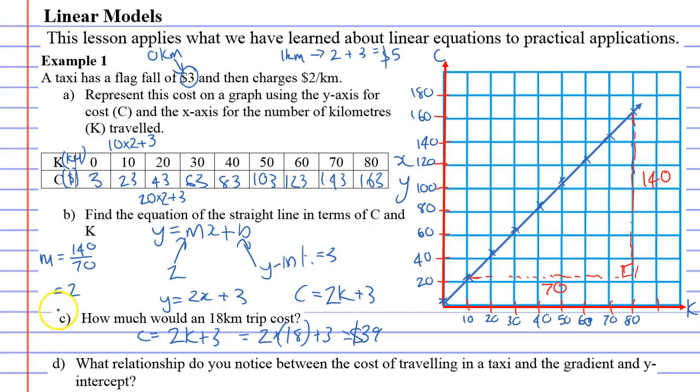Last of all, question D. If we look at the cost of a taxi, it was $2 per kilometer, and the flag fall was $3. Down here, we found that the gradient was 2, so gradient is the same as the cost per kilometer. We also found that the Y-intercept was 3, which is the same as the flag fall. So we'll write that down. The flag fall was the same as the Y-intercept, and the cost per kilometer was the same as the gradient.